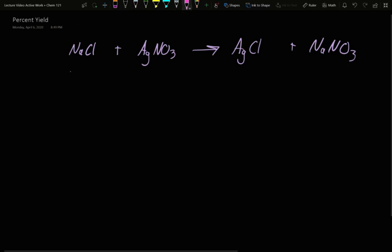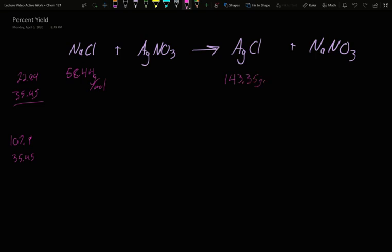If we want to add up molecular masses, sodium plus chloride is 22.99 plus 35.45, which is 58.44 grams per mole. We're going to do silver chloride as well. Silver is 107.9, chloride again 35.45, for a total molecular mass of silver chloride at 143.35 grams per mole.